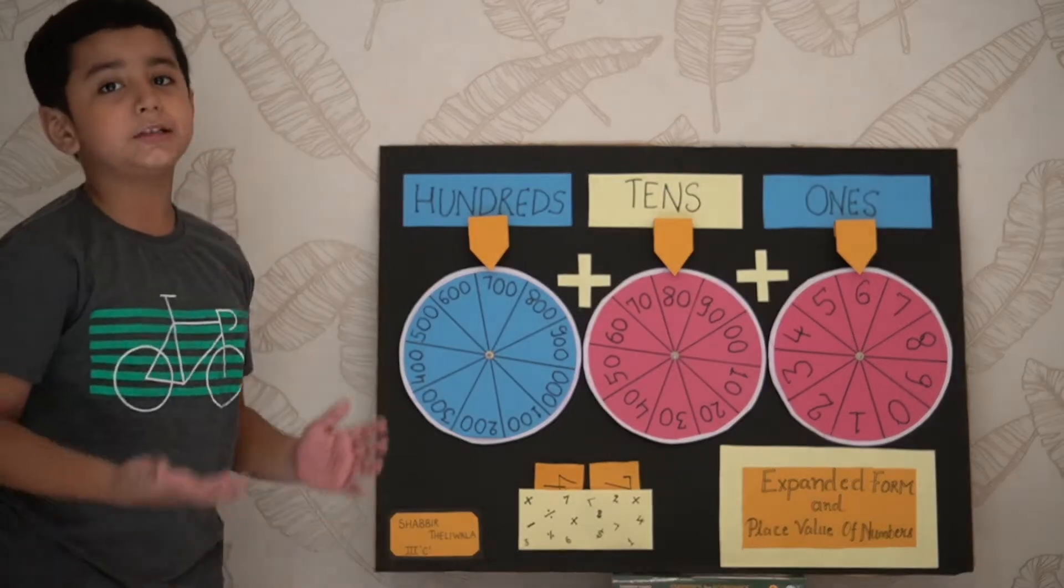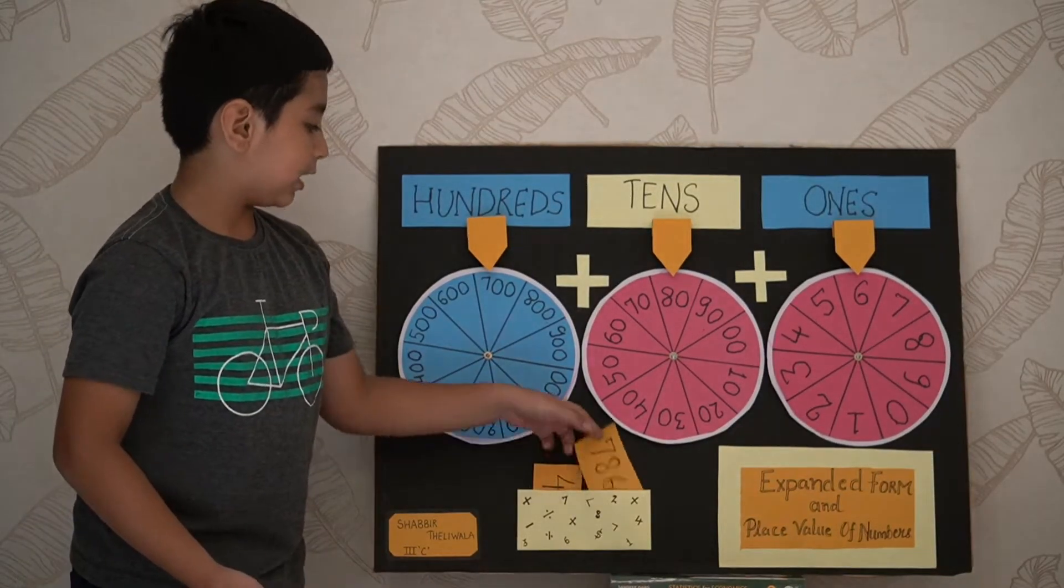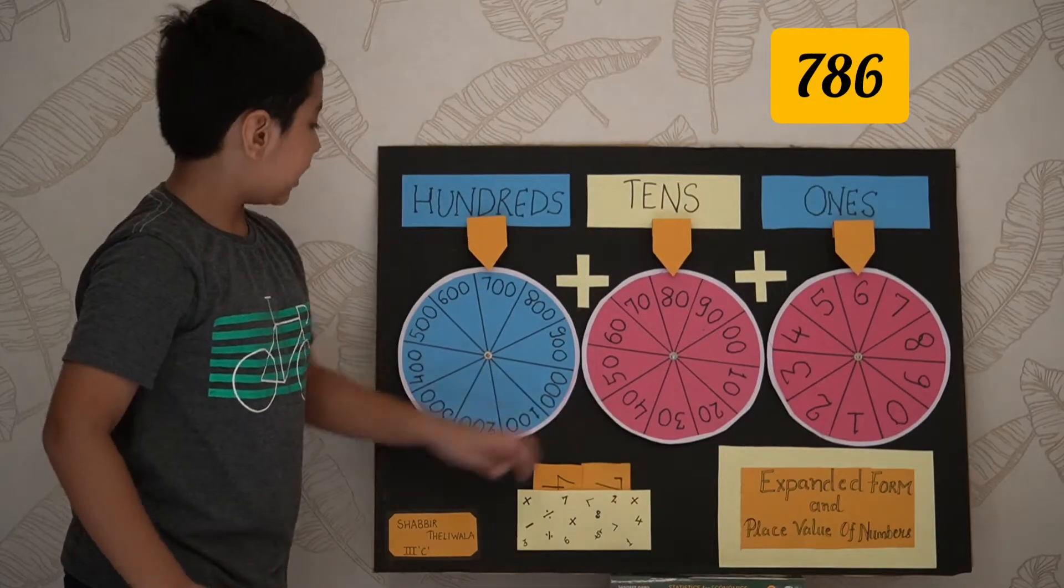I made a model to explain expanded form and place value of numbers. Let's take a number 786. 7 is at 100th place, 8 is at 10th place, 6 is at 1st place.